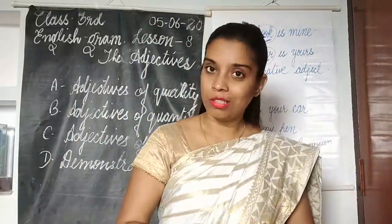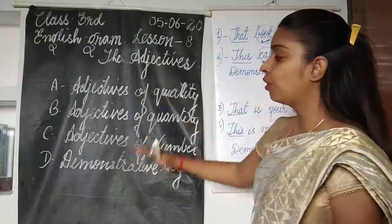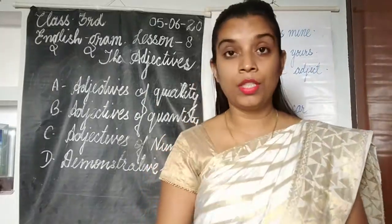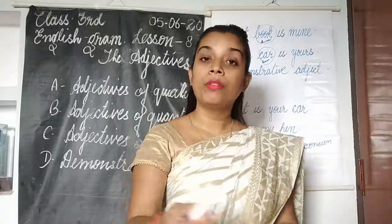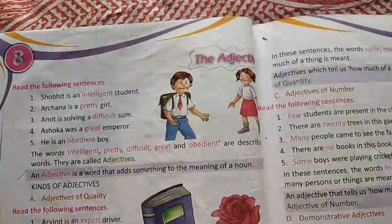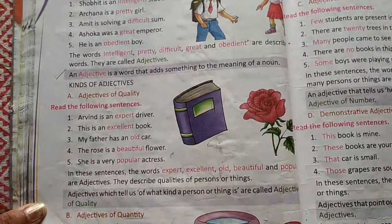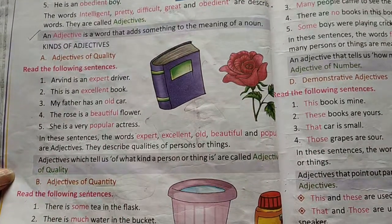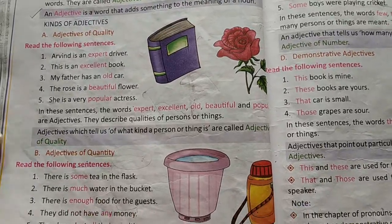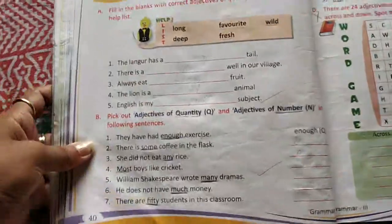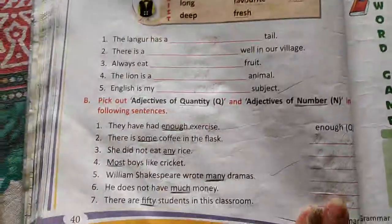So I hope the difference is clear to you. These are the four kinds of adjectives. Now I am going to solve the exercises given in your book. Adjectives have four kinds: adjectives of quality, quantity, number, and demonstrative adjectives.